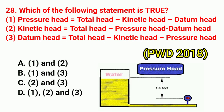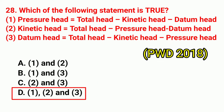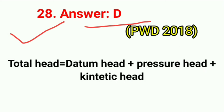Question No. 28. Which of the following statements is true? First: pressure head = total head − kinetic head − datum head. Second: kinetic head = total head − pressure head − datum head. Third: datum head = total head − kinetic head − pressure head. Correct answer is option D: first, second, and third all are true. Total head = datum head + pressure head + kinetic head.